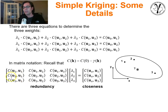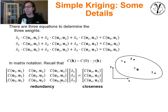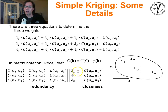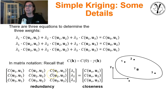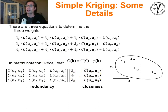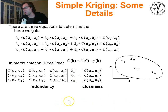To solve: we populate the covariances using our positive definite spatial continuity model — recalling that covariance at lag H equals the sill minus the variogram at H. We invert the left-hand side and multiply by the right-hand side to get the weights. You could do it in Excel; it's very straightforward.